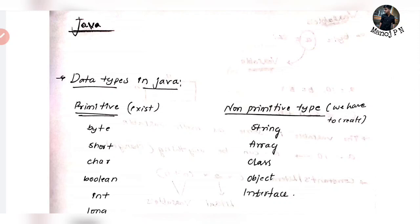Hey guys, welcome back to another video. This video is very important. Why? Because you are learning a programming language. Otherwise you need to check any type language. So how is it? You are learning to use the data types. Since Java is a type language - what do you mean by type language?